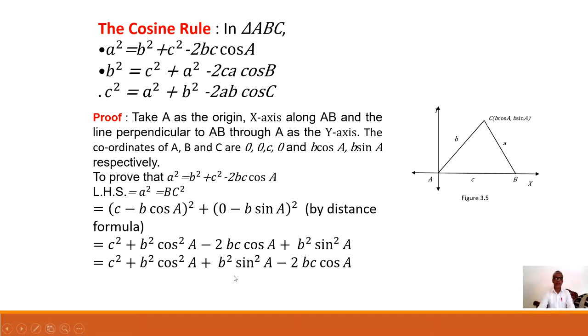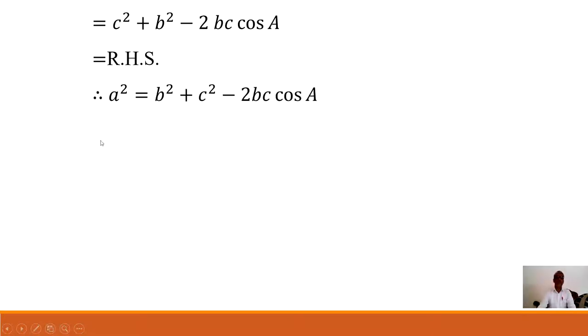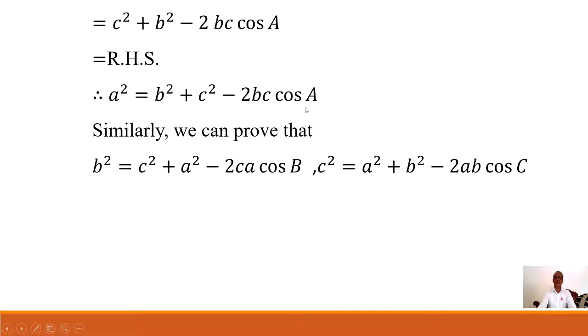Expanding the two brackets, we get b²cos²A and b²sin²A — here b² is common, so we take it outside the bracket. Then cos²A + sin²A is the first fundamental identity, which equals 1. Therefore we get c² + b² − 2bc·cosA, which is the cosine rule and equals the RHS. Therefore, a² = b² + c² − 2bc·cosA. In this way, we can prove the first cosine rule by choosing vertex A at the origin.